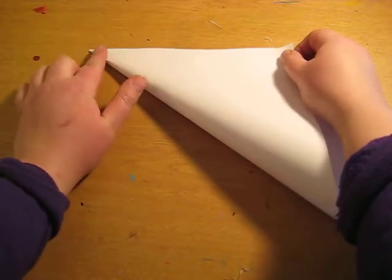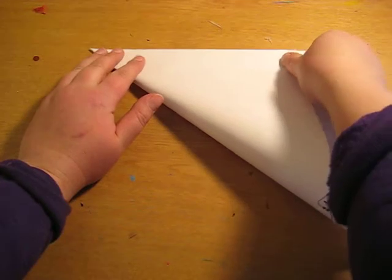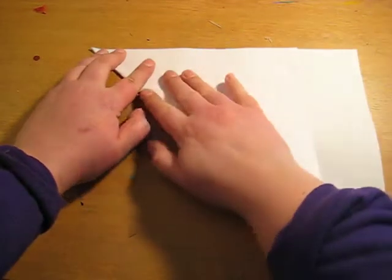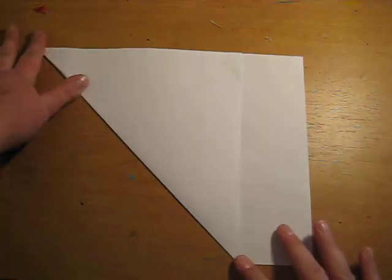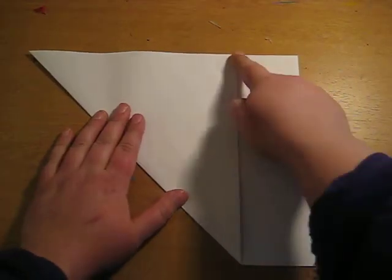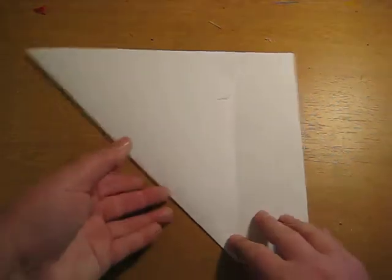Make sure this corner right here matches up before you give it a good crease down the side. Then, you're going to want to cut off this extra rectangle piece.